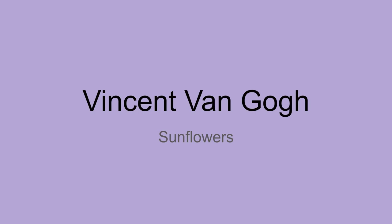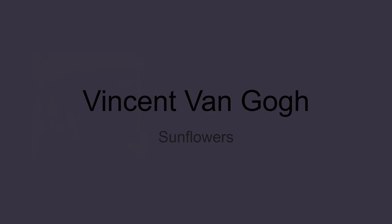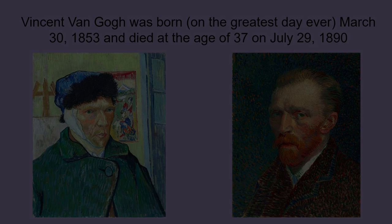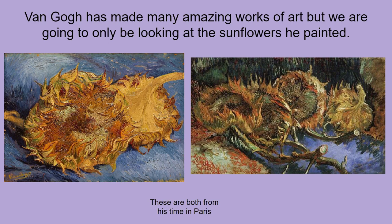Today we're going to be looking at the art of Vincent Van Gogh, specifically the sunflowers that he created. Van Gogh was born on, in my opinion, the greatest day ever, March 30th, back in 1853, and he sadly died at the age of 37 on July 29th, 1890. Van Gogh has made many amazing artworks — you've probably seen things like Starry Night, which has even made it into movies like Home or SpongeBob — but we're going to be mostly looking at sunflowers that he made.